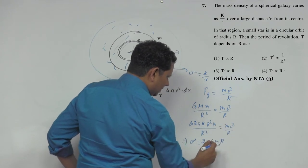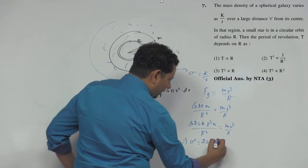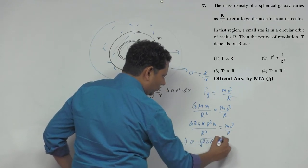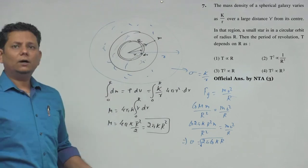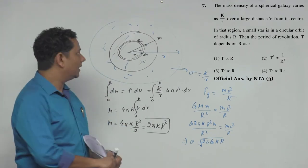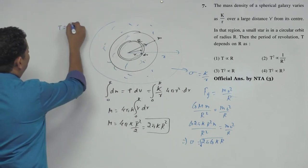So v² equals 2πGkr. The m cancels, one r remains. The value of v is under root of this. So v is found. Now we know that if a particle does circular motion with velocity v, the time period T equals 2πr divided by v.